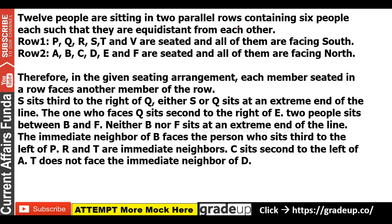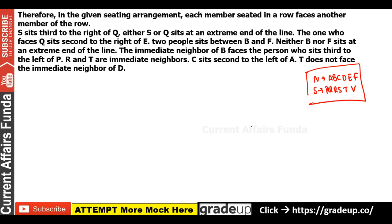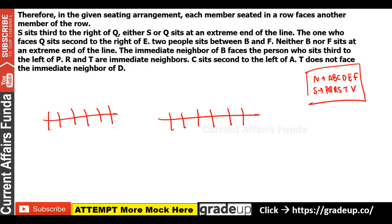There are 12 persons in 2 rows, 6 people each. Row 1 contains P, Q, R, S, T, N, V — facing South. Row 2 contains A, B, C, D, E, F — facing North. Let's write the arrangement: North-facing are A, B, C, D, E, F; South-facing are P, Q, R, S, T, V. Always make 2 diagrams since there are at least 2 minimum possibilities.